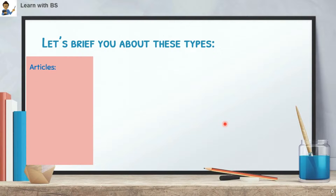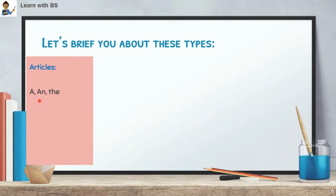First, Articles. What are articles? We have Definite Articles and Indefinite Articles. Indefinite articles are 'A' and 'An', and the Definite article is 'The'. This is what you have read from childhood — A, An, and The. These are determiners of the Article type.